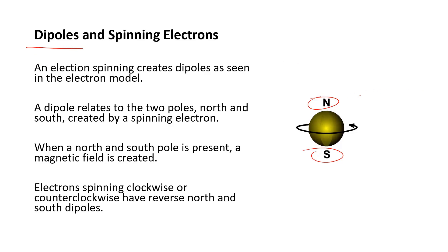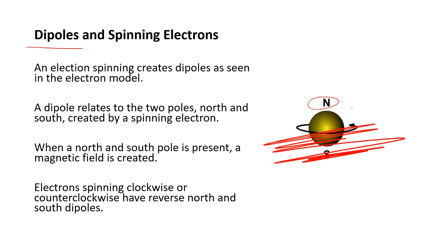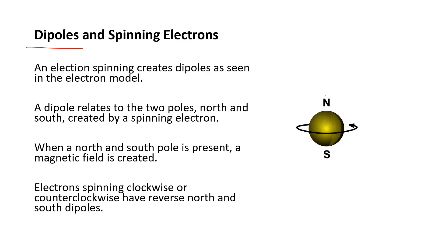You cannot create a monopole. A monopole is a fictitious thing that just doesn't happen. You can't have a north without a south. It's the spinning that creates the north and the south. A dipole - when you think of poles, north pole and south pole - the dipole is the two poles created at the same time. You can't have a north without a south.